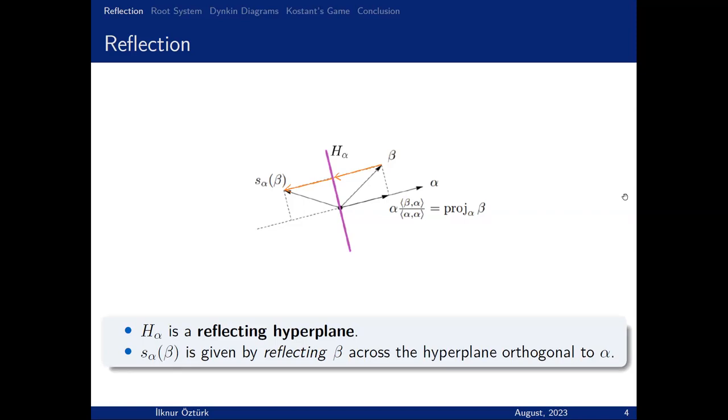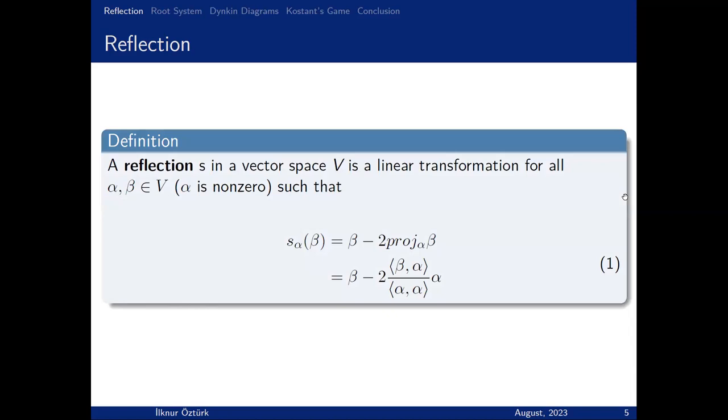To construct S_alpha(beta), first draw the projection vector of beta onto alpha. Then take the reverse of this vector, multiply by 2, and subtract beta. Then we obtain S_alpha(beta). This is the formal definition of the reflection transformation, as we just defined.